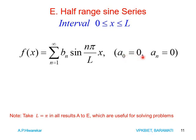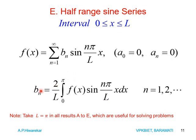For the half-range Fourier sine series, a₀ = 0 and aₙ = 0. Therefore F(x) = Σ bₙ sin(nπx/L) where n goes from 1 to infinity, and the formula for bₙ is (2/L) ∫ from 0 to L of F(x) sin(nπx/L) dx, for n = 1, 2, 3, and so on.